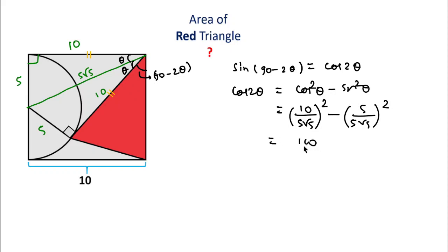This means 100 over 125 minus 25 over 125, which equals 4/5 minus 1/5, giving us 3/5. Therefore, cos(2θ) = 3/5.